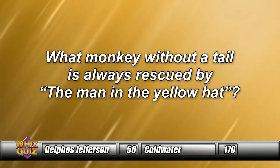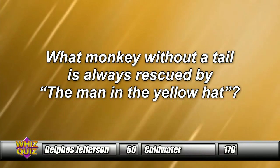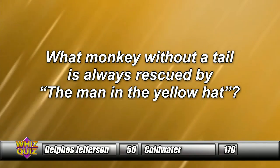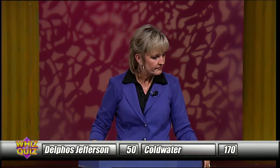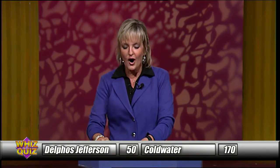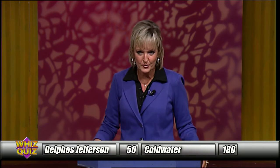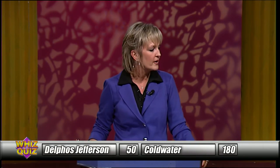Final question of round two: What monkey without a tail is always rescued by the man in the yellow hat? Delphus Jefferson answers with just 'A monkey' — incorrect. Coldwater answers — 'Curious George' — Curious George is the answer. End of round two: Coldwater has 180 points, Delphus Jefferson with 50. We'll be back with our final 20 questions after the break.